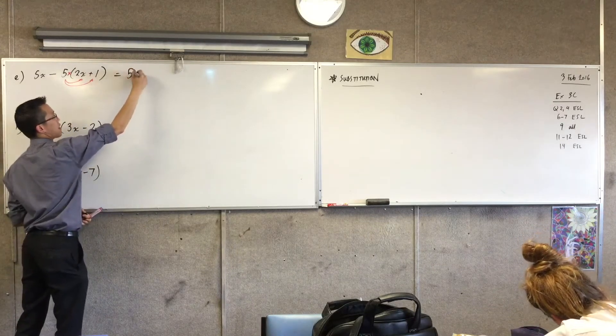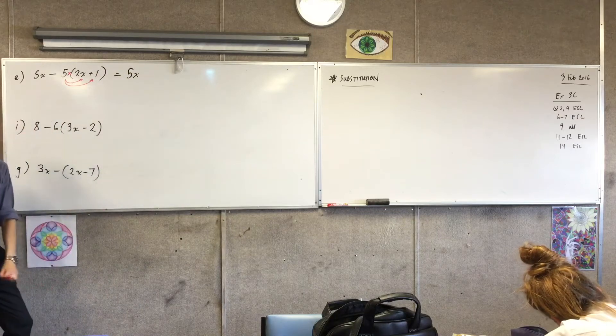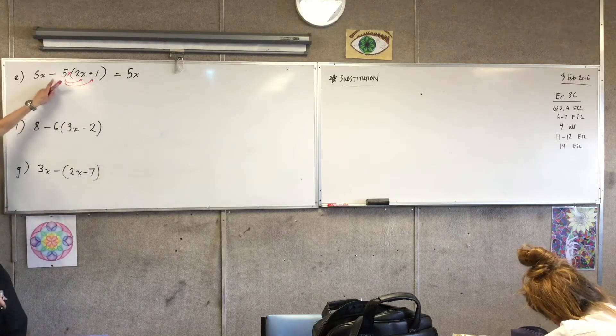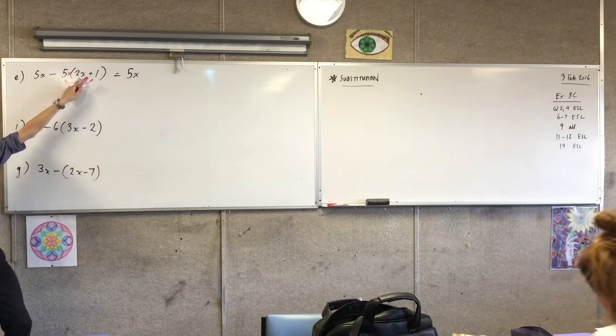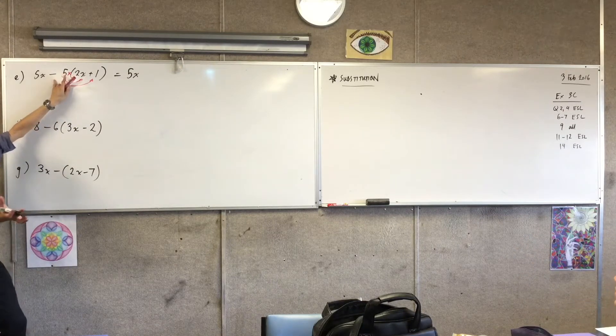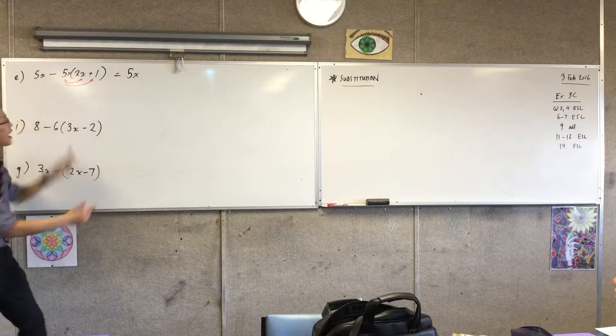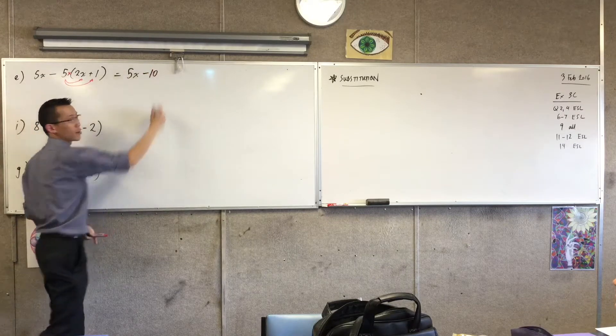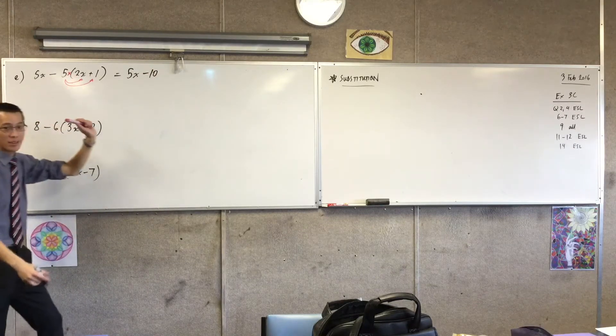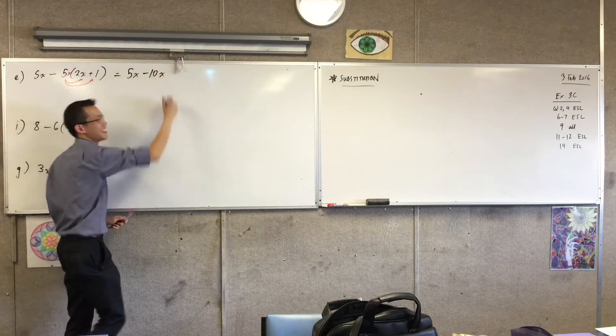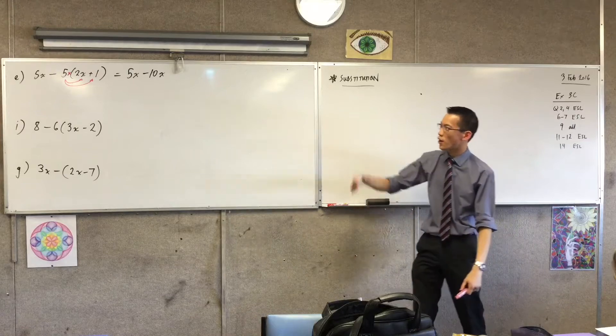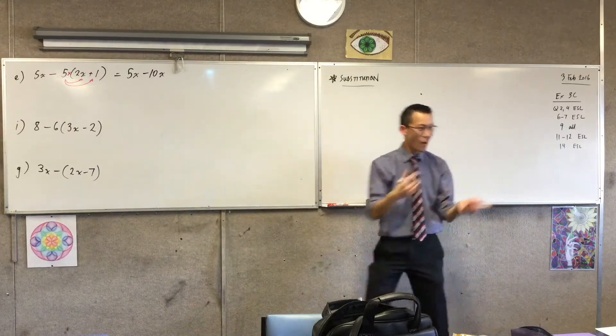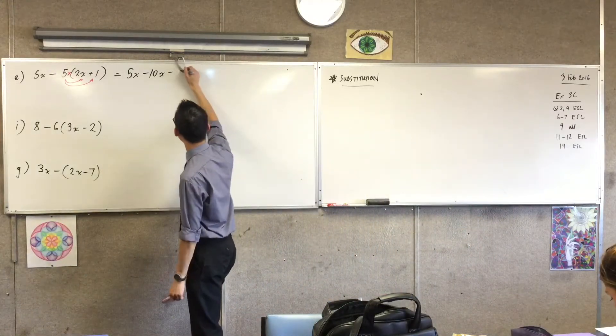Nothing's going to happen to this 5x. It's just hanging out the front there, not affected by the brackets. The first pairing is minus 5 times 2x. Deal with the numbers. 5 times 2, of course, is 10. And the minus sign comes along for the ride, along with the x. So I've done that bit. I have one more term left in the brackets. So I've got minus 5 times 1, which is minus 5.